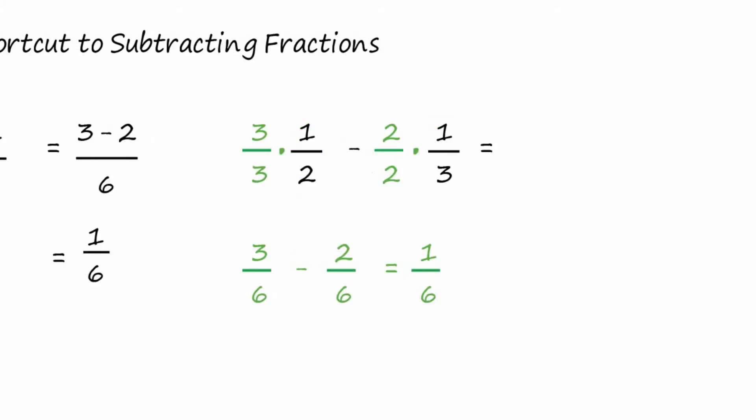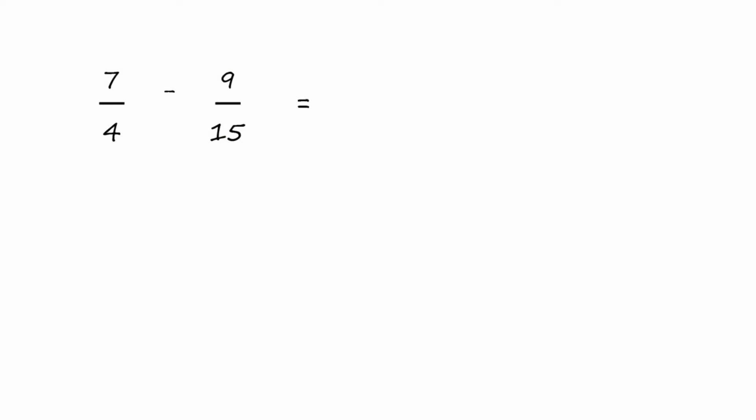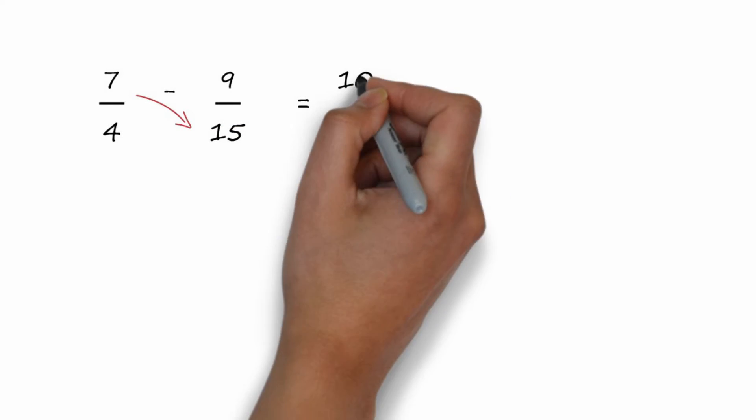Let's look at another example, so you can just see how it works on any fraction. We'll take seven-fourths minus nine-fifteenths. Our method is to take the upper left-hand corner, multiply by the lower right-hand corner, seven times 15 is 105.